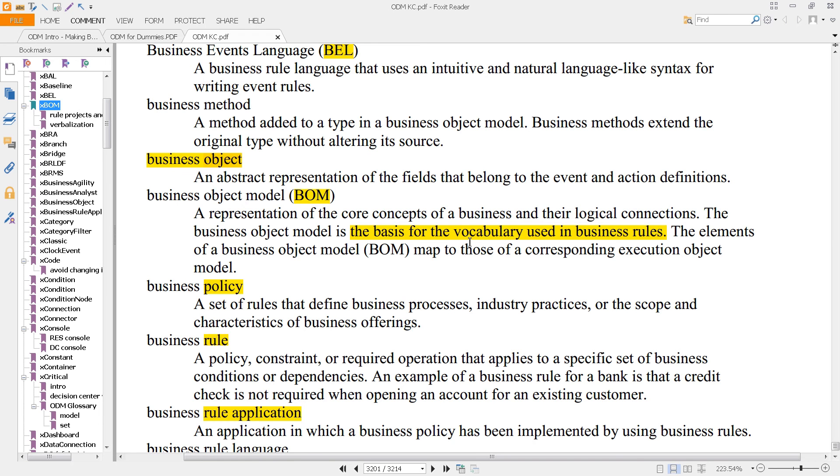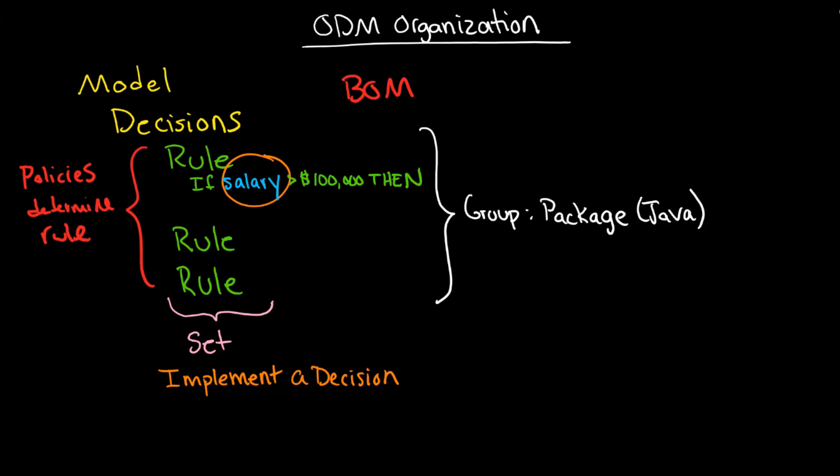It is the basis for the vocabulary and it's used in business rules. The elements of a BOM map to those of a corresponding execution object model. So this is important because they are, you will have something called a BOM and you'll have another thing called a XOM.